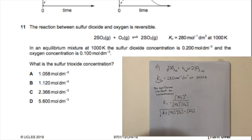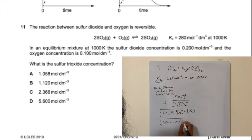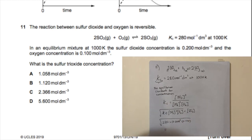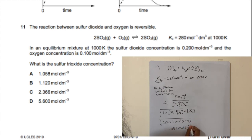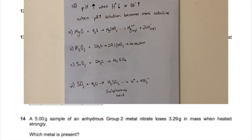Now we substitute the given values: Kc is 280, the sulfur dioxide concentration is 0.2 squared, and the oxygen concentration is 0.1. Placing that in the calculator gives 1.058 mol dm⁻³. The only option with this answer is A.